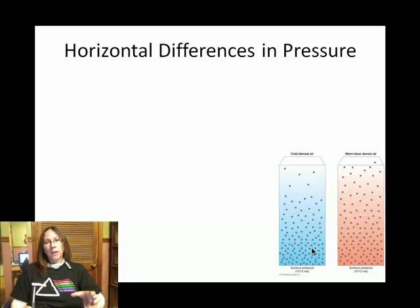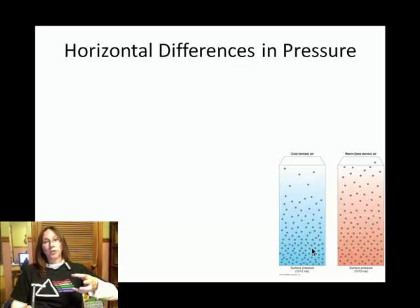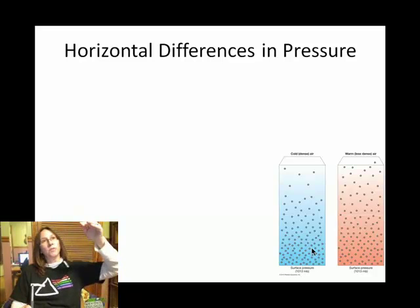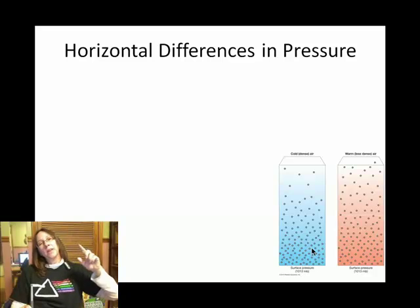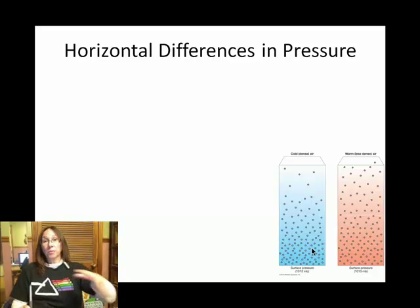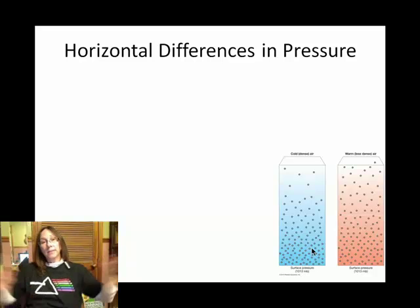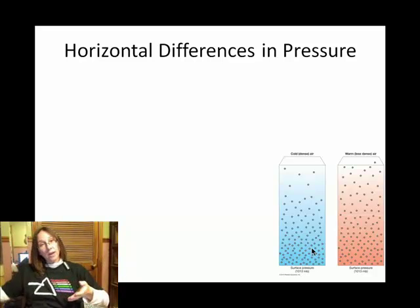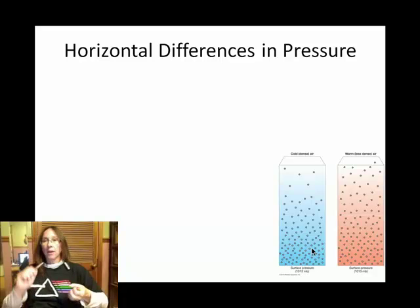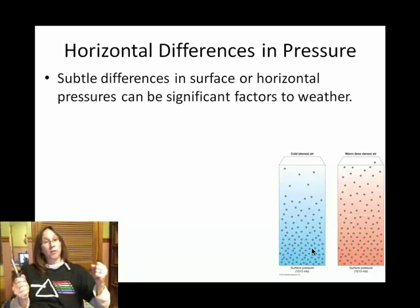On vertical difference in atmospheric pressure, as you go up in elevation, the pressure gets less. But more importantly, to producing wind, there are also differences in pressure horizontally. I'm going to present three ways that you can get, horizontally speaking, pressure A over here and pressure B over here, so they're different.